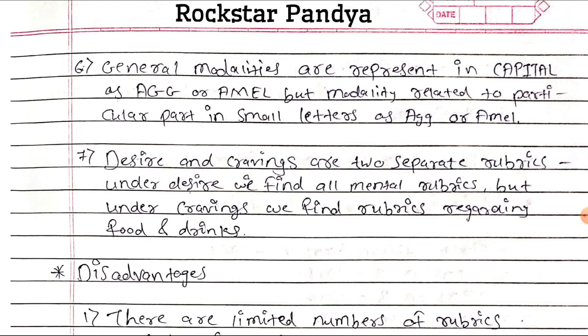Desires and Cravings are two separate rubrics. Under Desires we find all mental rubrics, but under Cravings we find rubrics regarding food and drinks.